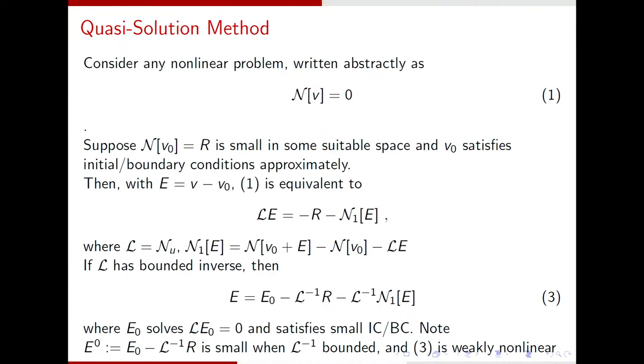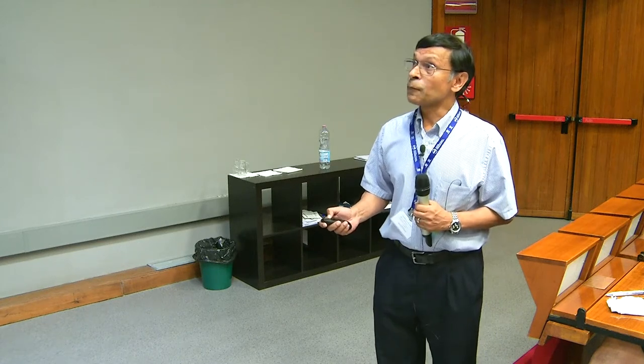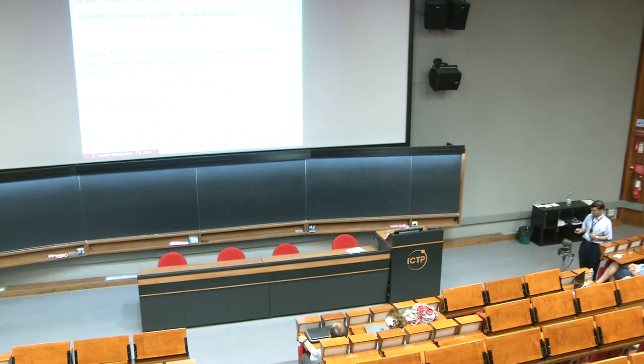One thing to be noted is that if you have small initial slash boundary condition, E0 will be small for any reasonable problem. So E0 will be small. If L inverse is bounded, and residual is something that you can control depending on how accurate you make the solution, this is also small. So these two quantities, which I call E sub-zero, is small. And then you have this non-linearity, so this becomes a weakly non-linear problem. So a strongly non-linear problem has been transferred into a weakly non-linear problem, which is very suitable for Banach contraction theorem proving existence. And in the process, you're able to come up with an analytical formulation of V0.